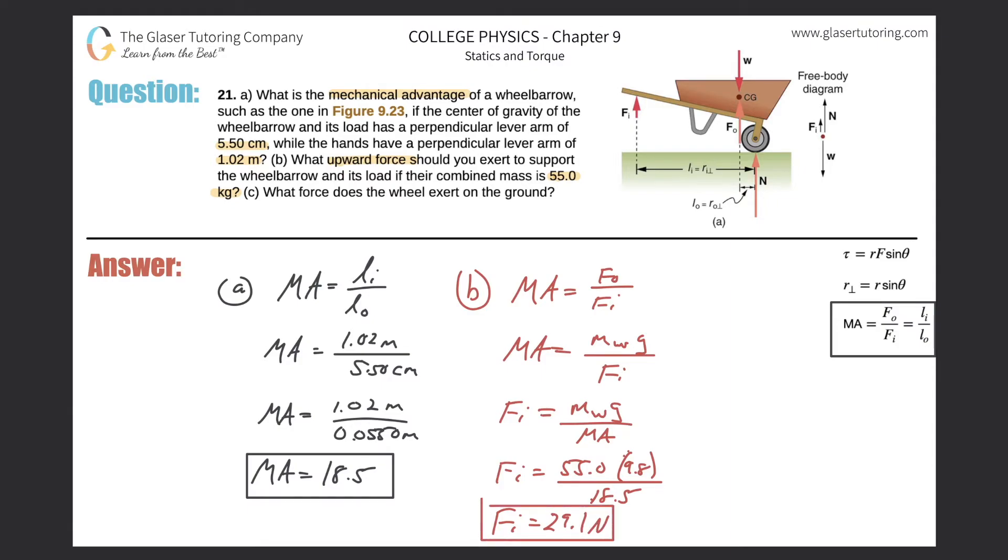Easy peasy. Last one, letter C. What force does the wheelbarrow exert on the ground? So basically it's asking us what force is this wheelbarrow exerting downward on the ground. So that would be equal to but opposite in direction of the normal force that the ground is pushing up on this wheelbarrow. So let's just think about the forces in the problem. There are three: we have the input force pointing up, we have the weight of the wheelbarrow and its contents which is pointing down.